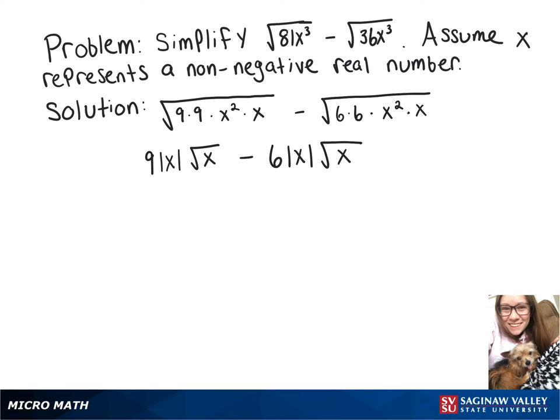And now, since they're both being multiplied by the square root of x, we can go ahead and subtract our 9x minus 6x, giving us 3x times the square root of x.